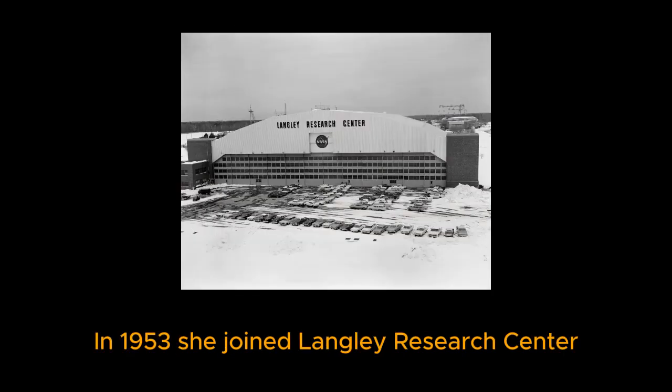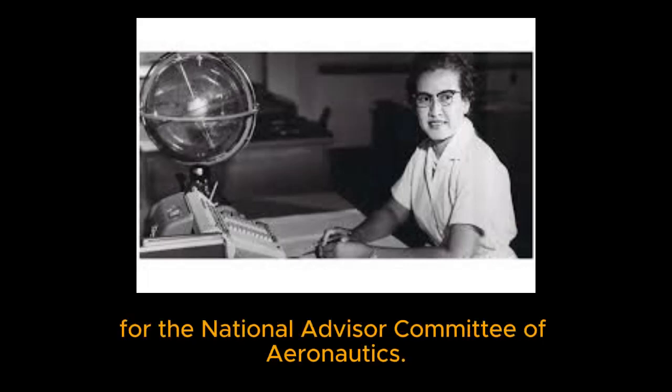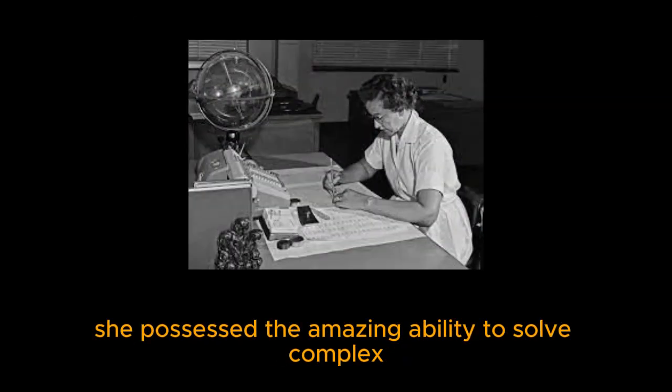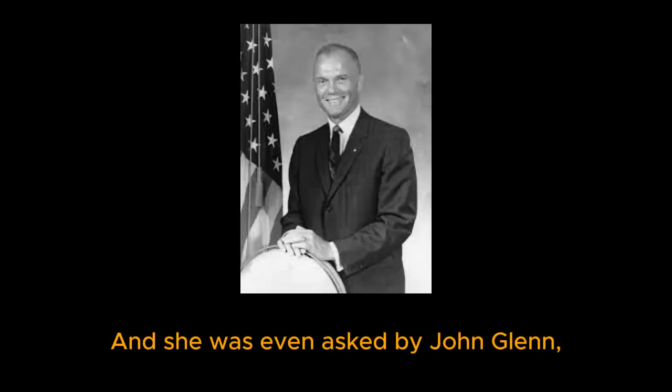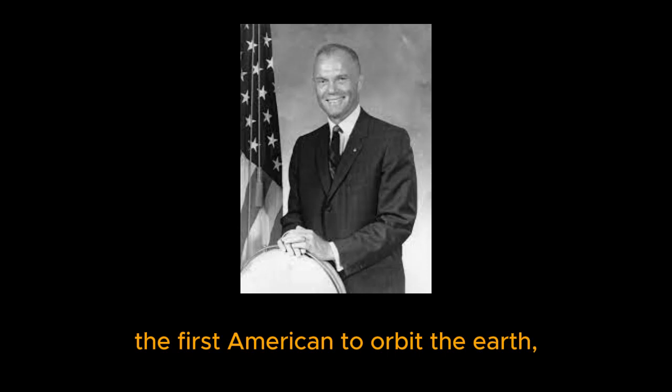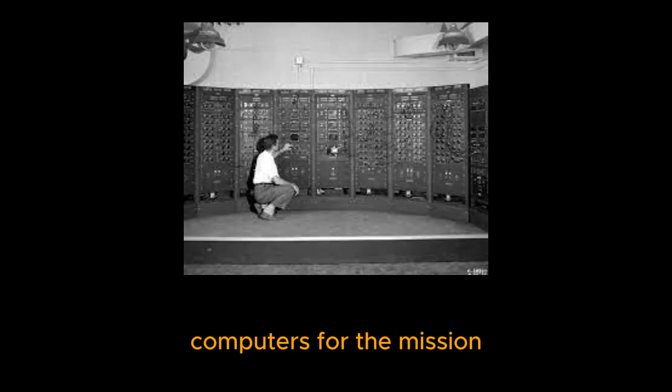In 1953, she joined Langley Research Center as a research mathematician for the National Advisory Committee of Aeronautics. She possessed the amazing ability to solve complex math problems with extreme precision, and she was even asked by John Glenn, the first American to orbit the Earth, to recheck all the calculations that were made by the computers for the mission to ensure that they were flawless, proving how skilled and talented she was at her work.